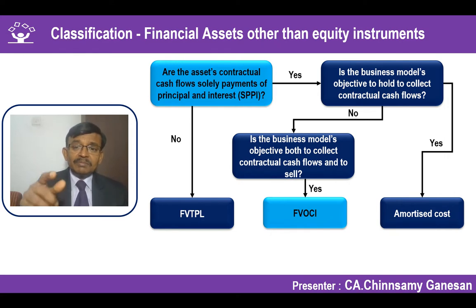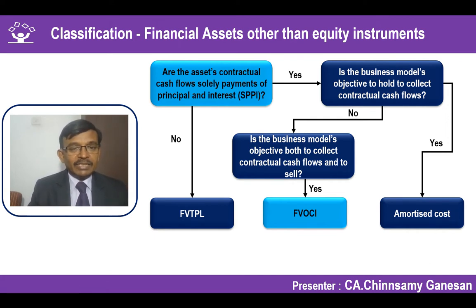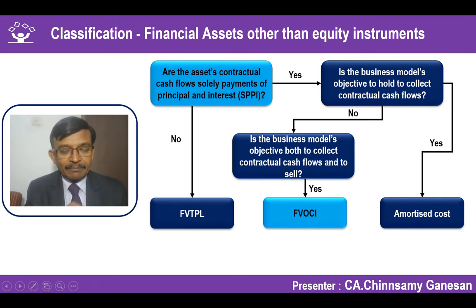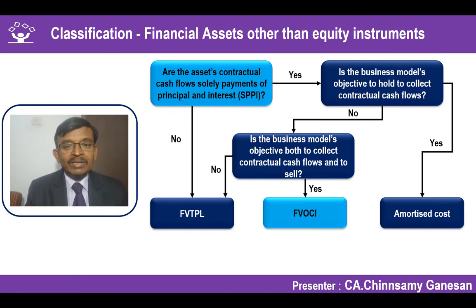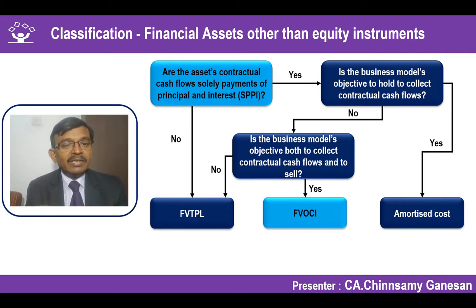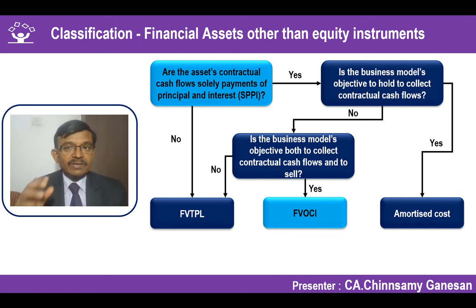Suppose the business model objective is neither to hold and collect contractual cash flows, nor to both collect contractual cash flows and sell - in that case, fair value through P&L is the residual category. If I am not able to conclude whether the business model is to collect only SPPI or to collect SPPI and sell, then automatically as a residual category it comes to fair value through P&L. Keep this flowchart in mind.